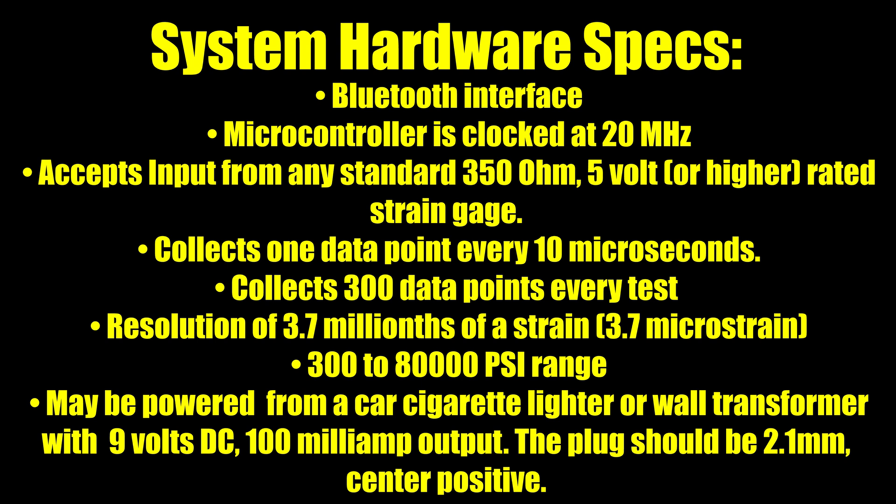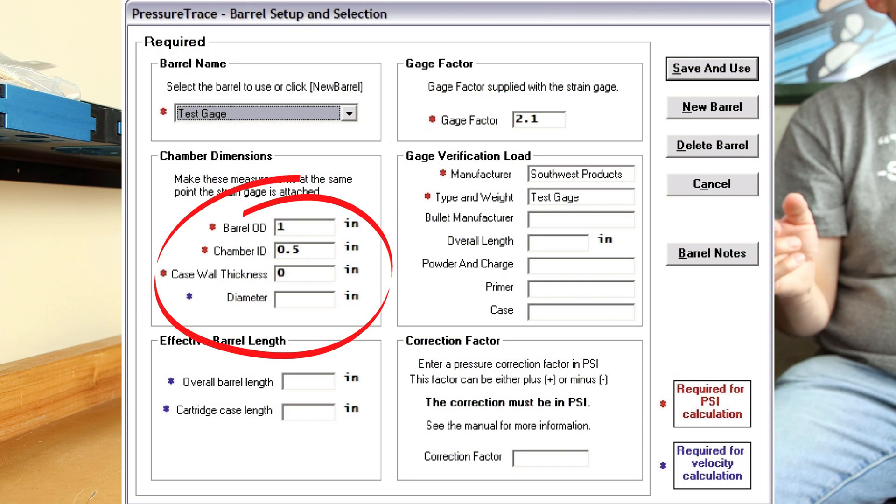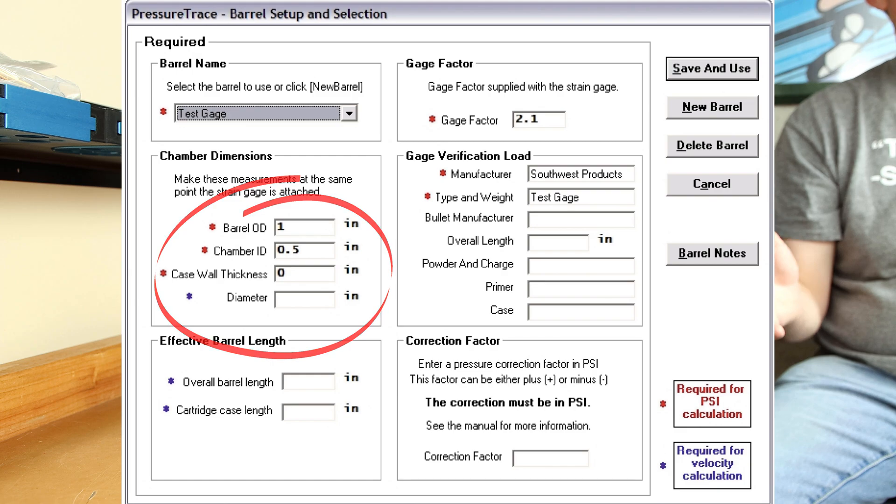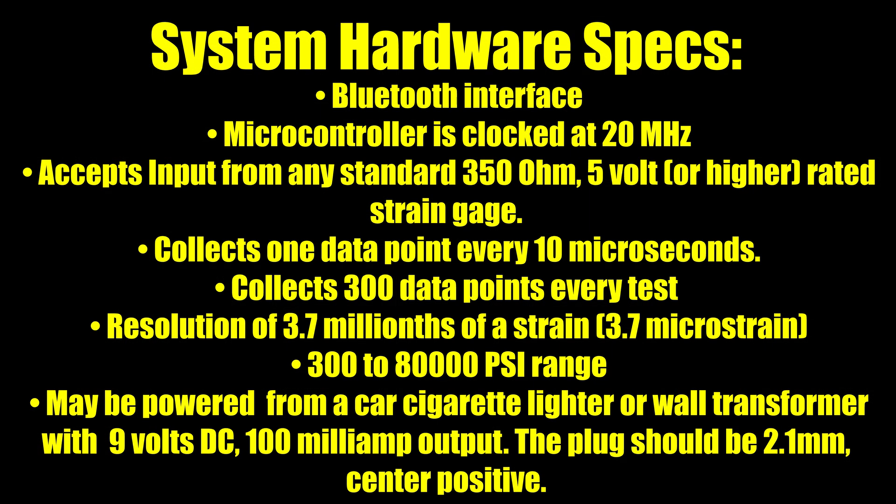The microcontroller inside it is clocked at 20 megahertz, and it accepts an input from any standard 350 ohm 5 volt or higher rated strain gauge. This unit collects data every 10 microseconds, and with every firing, it collects 300 data points. The resolution of this unit is measured in micro strains, and frankly, I believe that's because depending on what your barrel diameters are and the caliber you're shooting is going to be what determines the exact pressure that you can resolve. The pressure this unit is rated for is anywhere between 300 and 80,000 PSI.